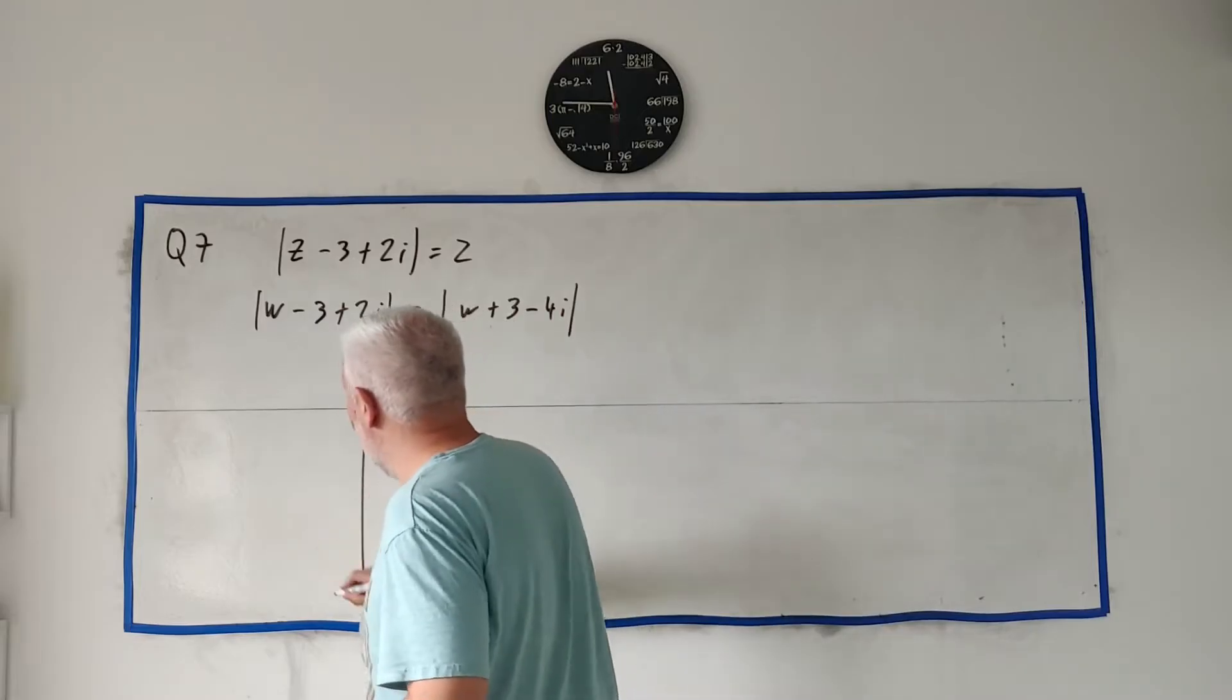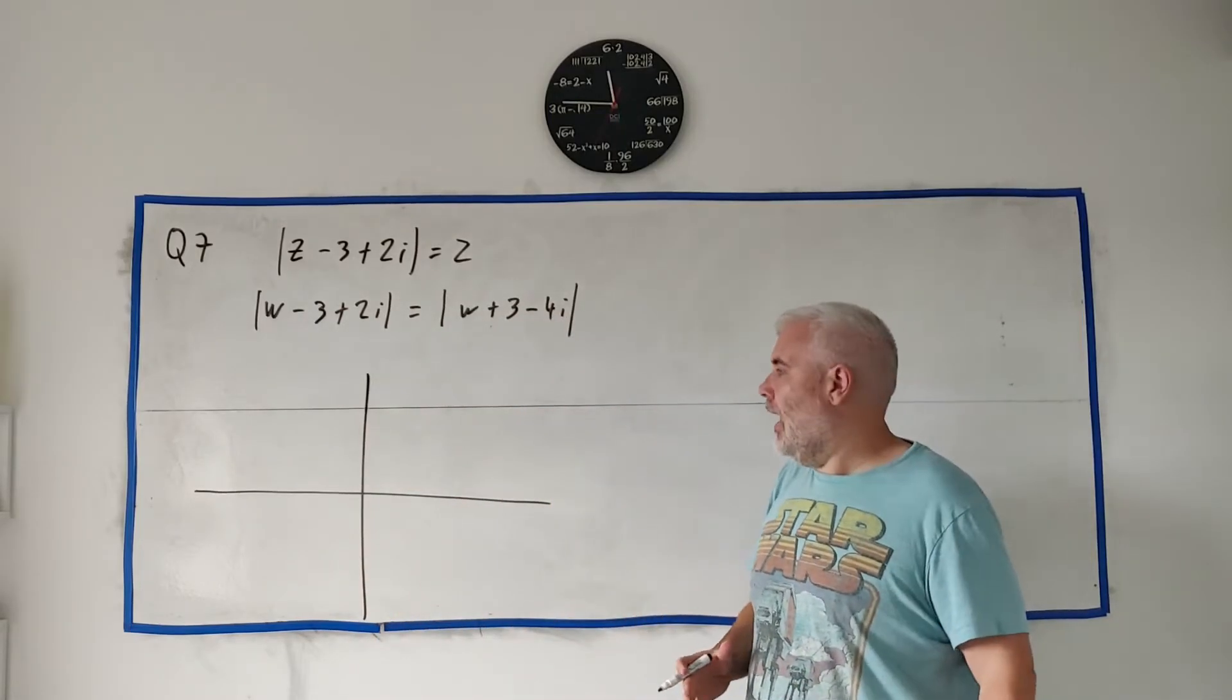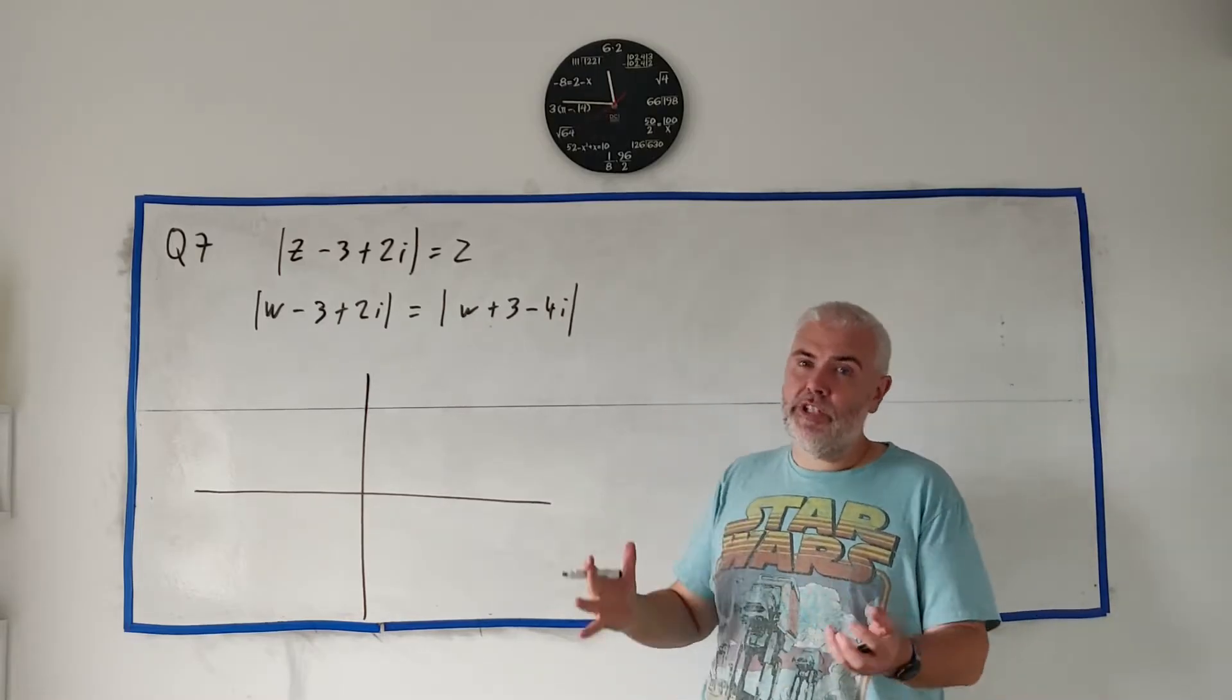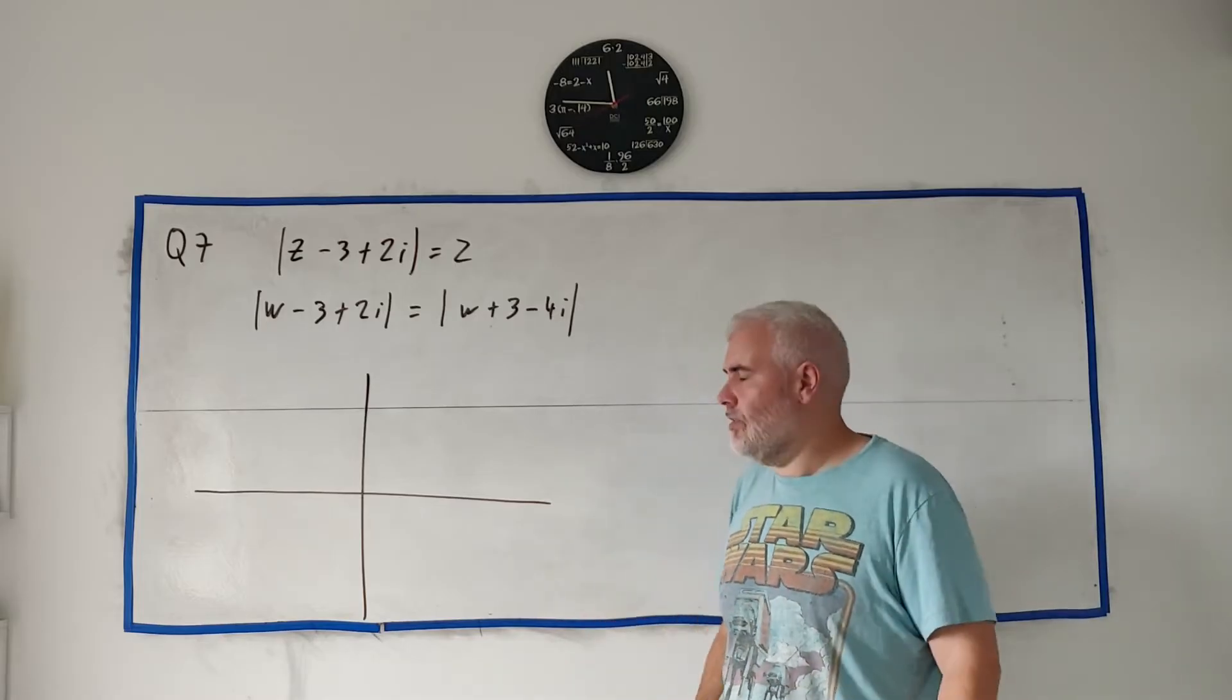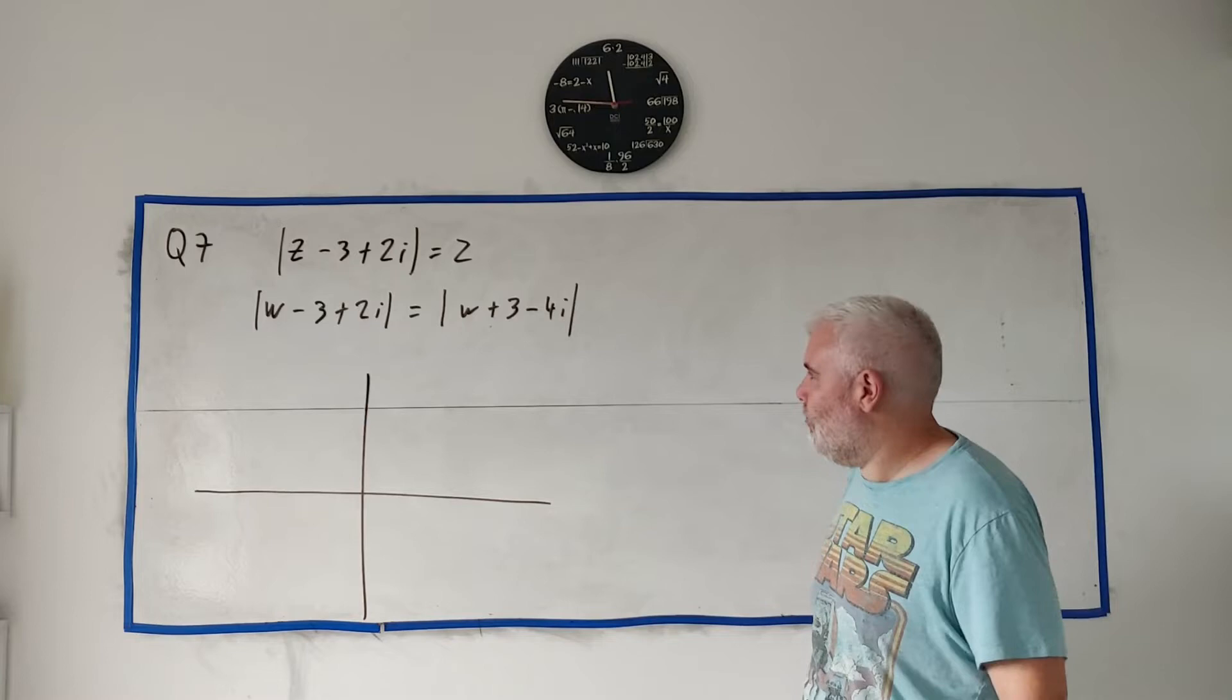Yeah, let me just draw an argand diagram. Now, you should be using proper ruled paper, ruler, a compass, just get it as accurate as you can. Don't spend too much time on it, it's only four marks for the question. But still, better than I do, but don't spend too much time.